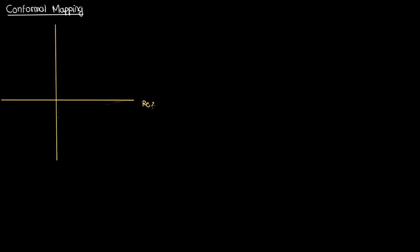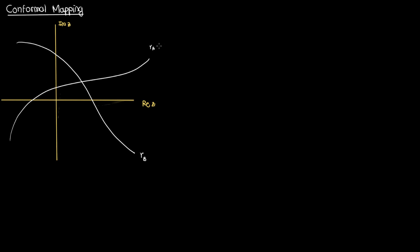Let's say that I have a complex plane and in that complex plane I have two finite curves gamma a and gamma b. Each curve is parametrized such that gamma a gives me a complex number z_a for some real number t defined between t1 and t2, while gamma b gives me a complex number z_b for some real number t also defined between t1 and t2. These curves gamma a and gamma b are also directed, which means that as I increase t from t1 to t2 I move along gamma a in this direction and gamma b in this direction. The point of intersection of gamma a and gamma b I'm going to label as z0.